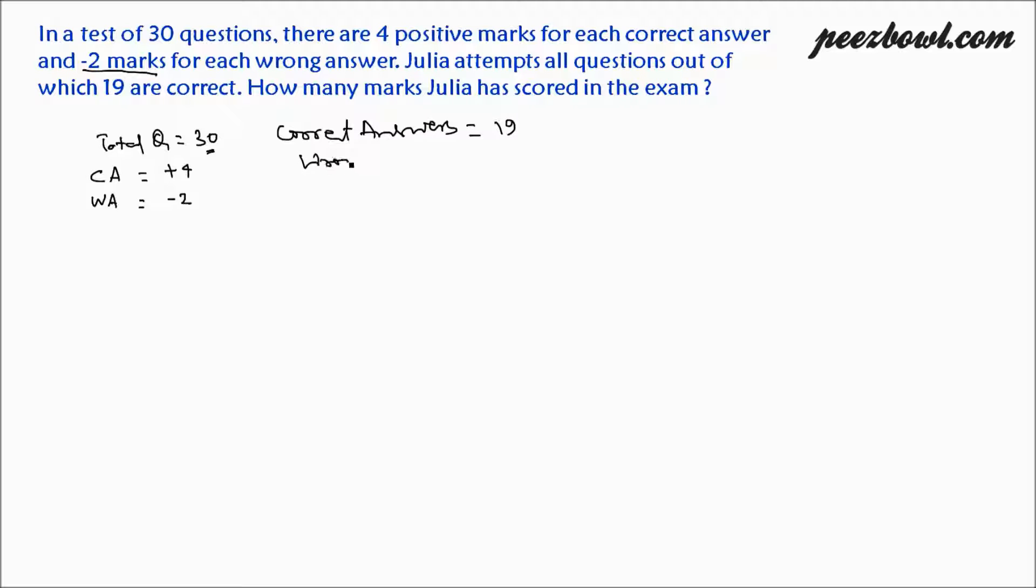And wrong answers is equal to 30 minus 19. This is equal to 11. So Julia has answered 19 correct answers and wrong answers were 11.